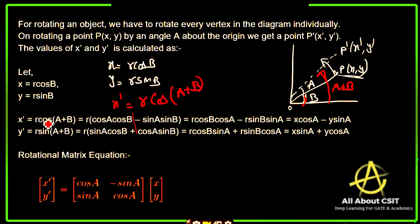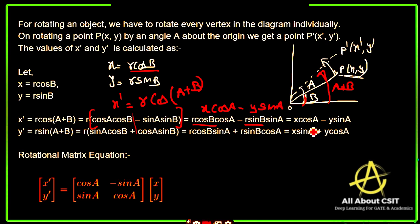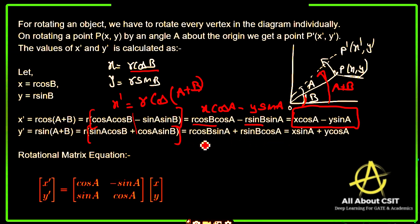Similarly, y' = r sin(a + b). Using the identity sin(a+b) = sin(a)cos(b) + cos(a)sin(b), and multiplying by r gives: r cos(b)·sin(a) + r sin(b)·cos(a). Since r cos(b) = x and r sin(b) = y, we get y' = x sin(a) + y cos(a). This is the complete formula for 2D rotation.